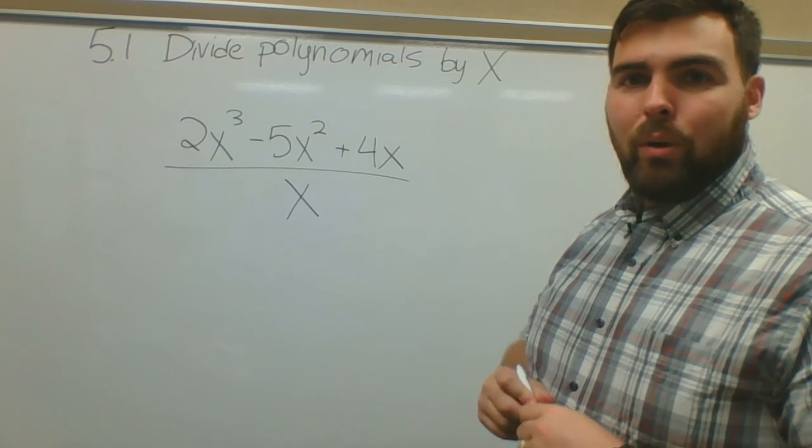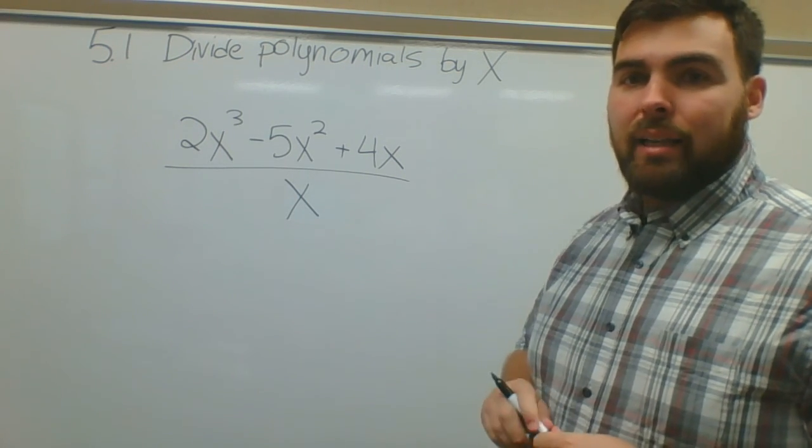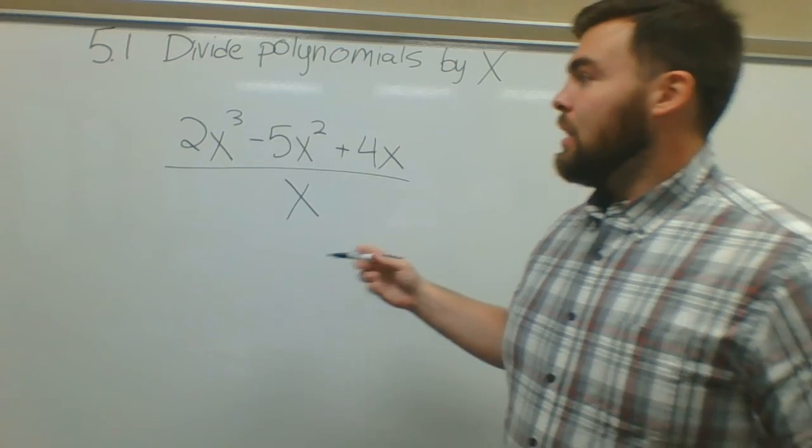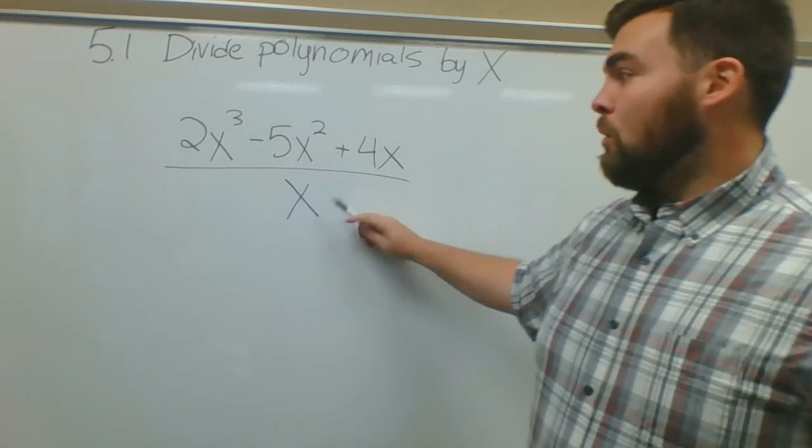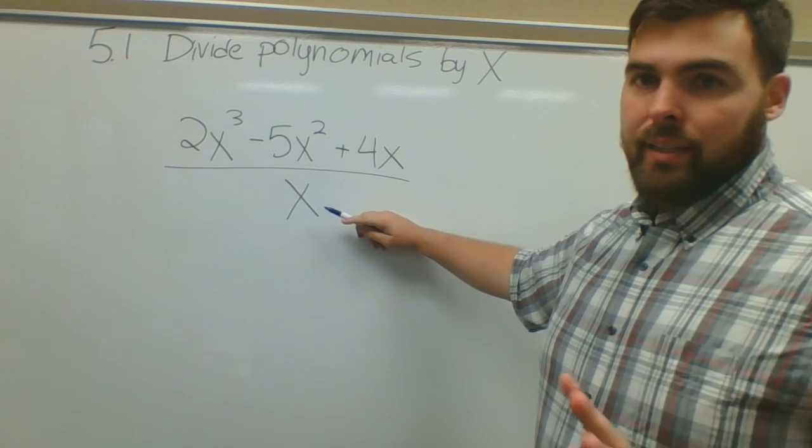Alright, this is 5.1 dividing polynomials by x. This is the typical problem you're going to see where you'll have a trinomial or binomial and it's going to be over, it'll only be x in this section here.